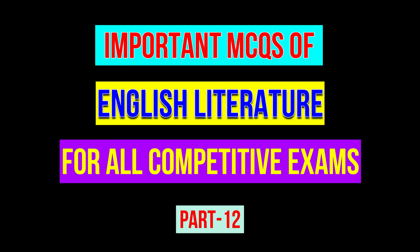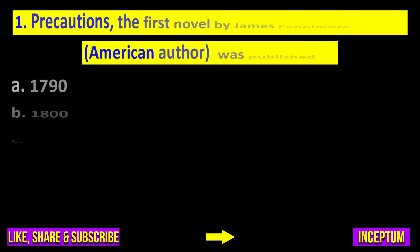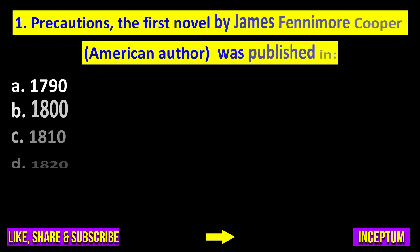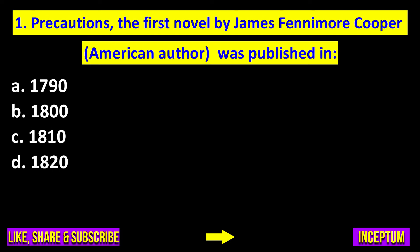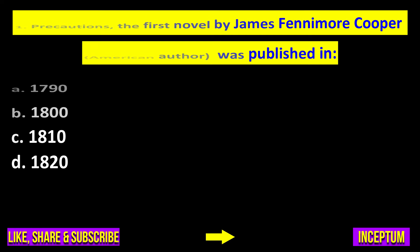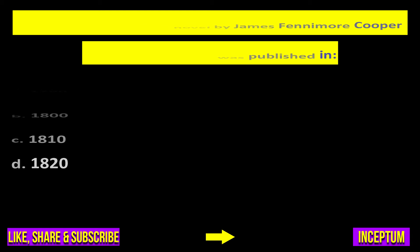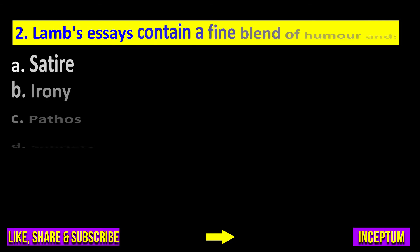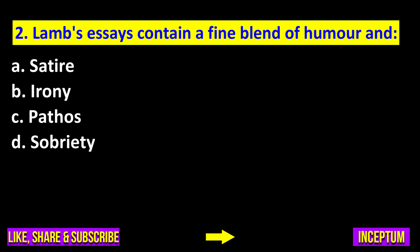Question number one: The first novel by James Fenimore Cooper, an American author, was published in — 1790, 1800, 1810, or 1820? The right answer is option D: 1820.